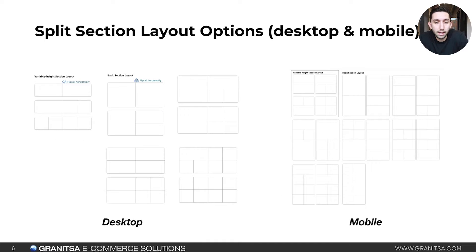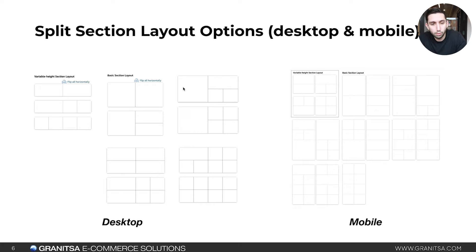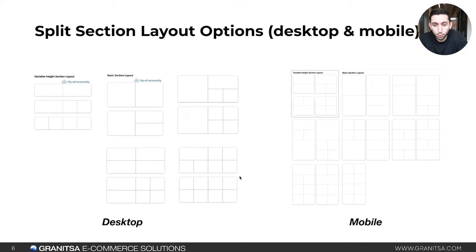Here you can see all of the split section layout options for desktop and mobile. The variable height section layout, which allows product, image, and text, is much more limited in style. These would be your desktop options and the enclosed box would be the same option on mobile — a side-by-side skinny image would stack, and so on. The basic section layout has a ton more options and layout choices, with mobile-optimized versions as well.